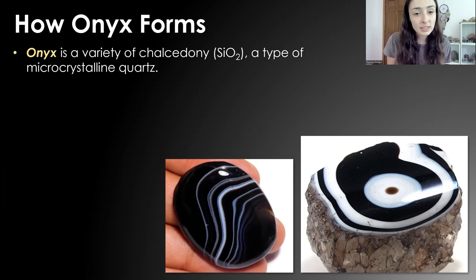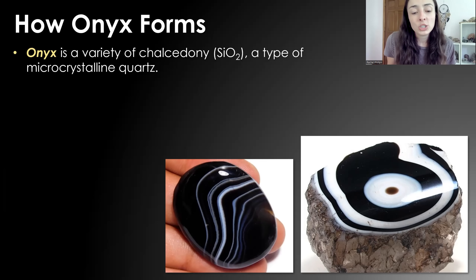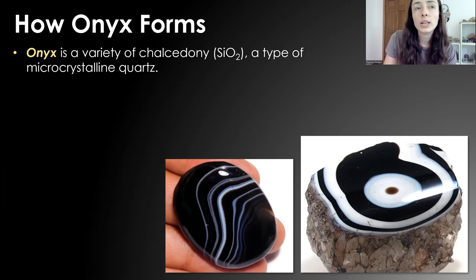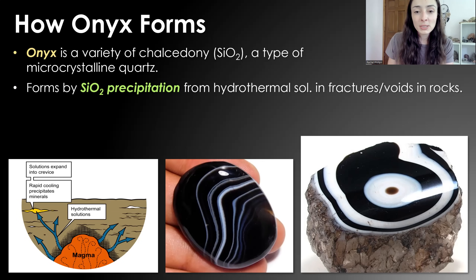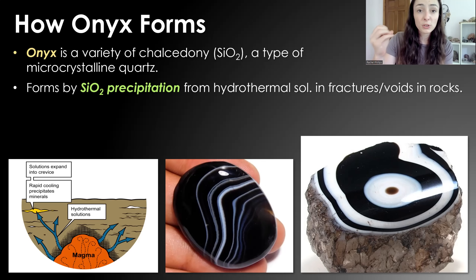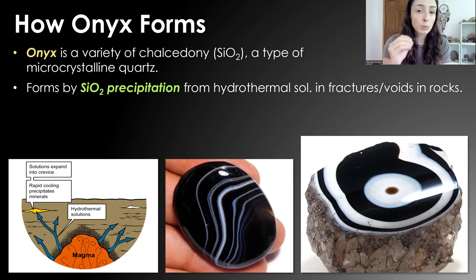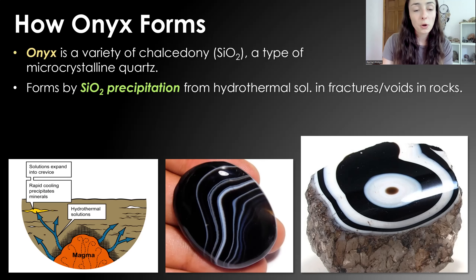Next we'll talk about onyx, which is a variety of chalcedony. Chalcedony is silicon dioxide — a type of microcrystalline quartz. Chert and flint are also microcrystalline quartz, but chalcedony tends to be shinier. Onyx and other types of chalcedony can form by silica precipitation from hydrothermal solutions in fractures and voids in rocks, similar to opal formation. Instead of forming the perfectly packed spheres of opal, the silica forms microcrystalline quartz — smaller crystal grain sizes typically indicate faster crystallization, making this a faster formation process than opal despite having the same composition.